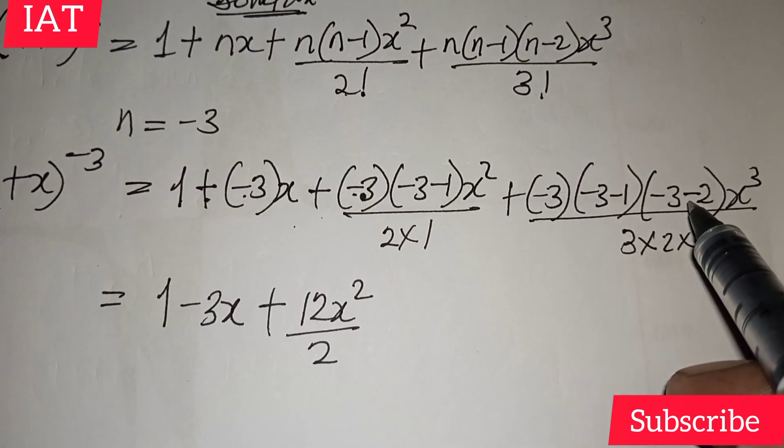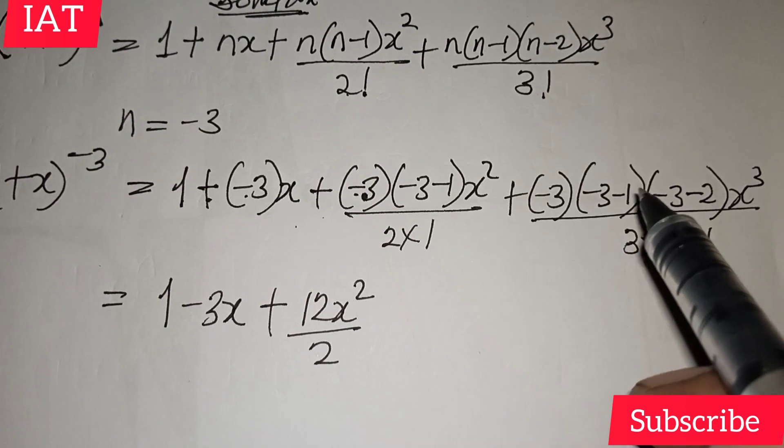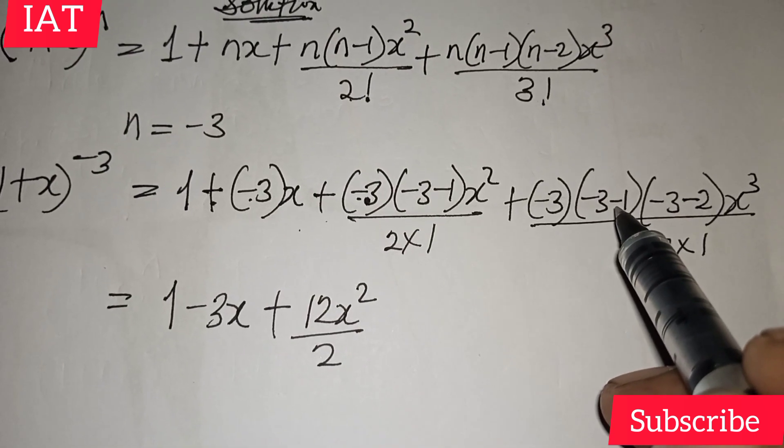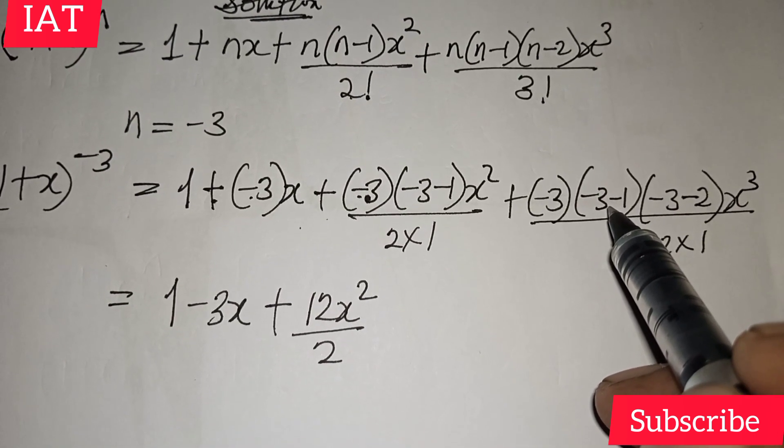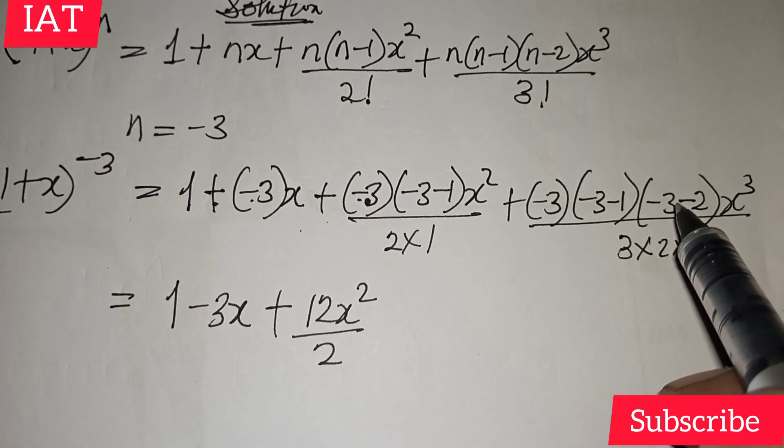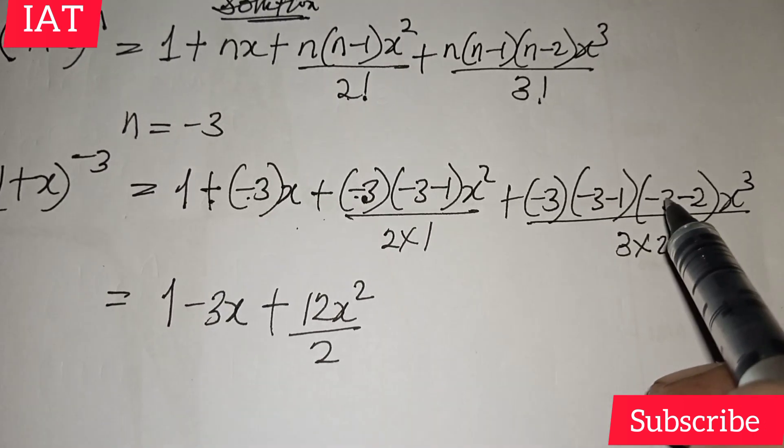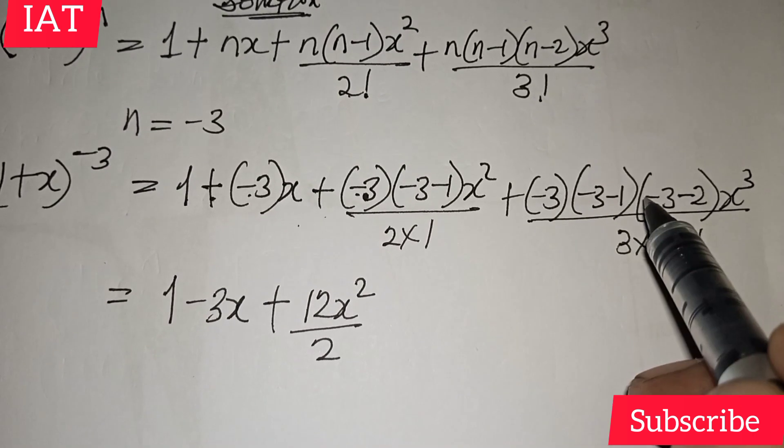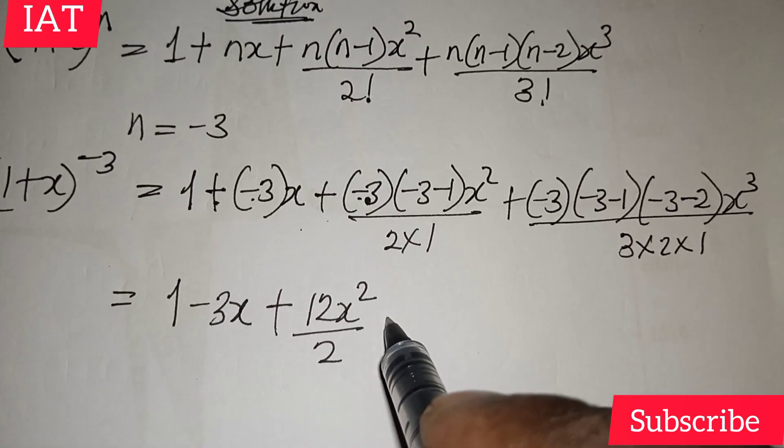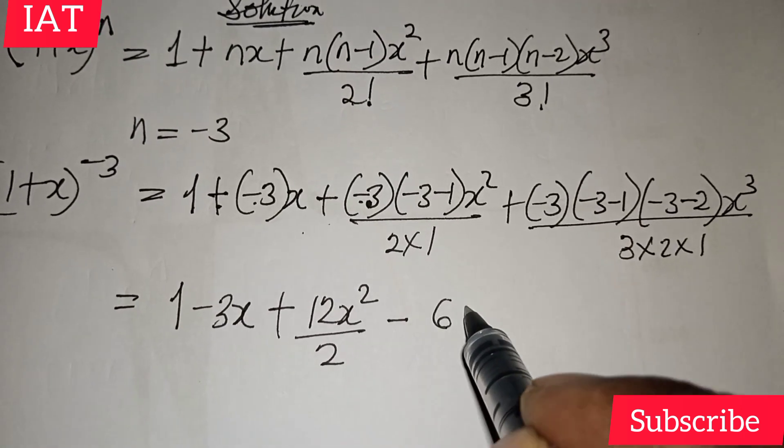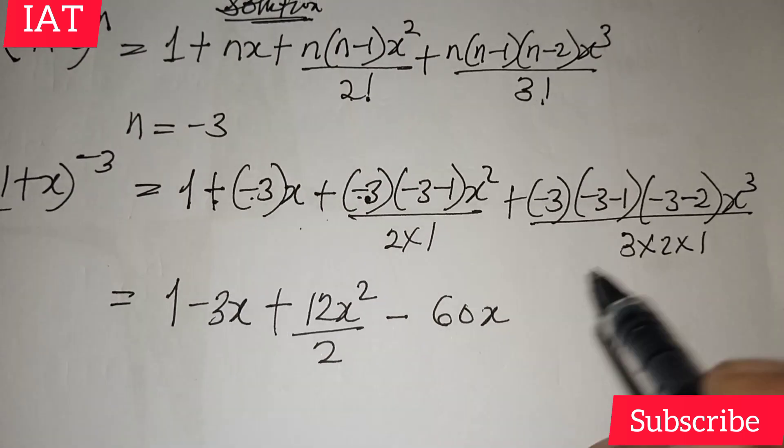Okay, here we have -3-2. That will be -5. And -3-1. That will be -4. -5 times -4 we get plus 20 if you multiply them. And then plus 20 times -3 we get -60, x to the power of 3.